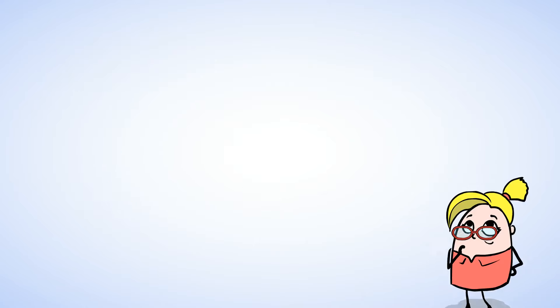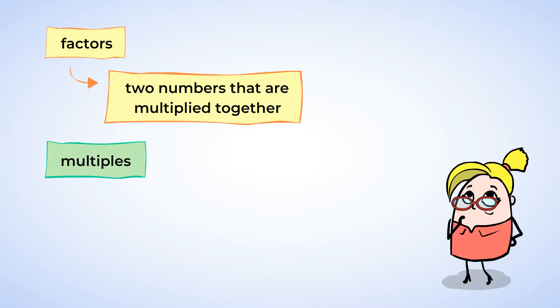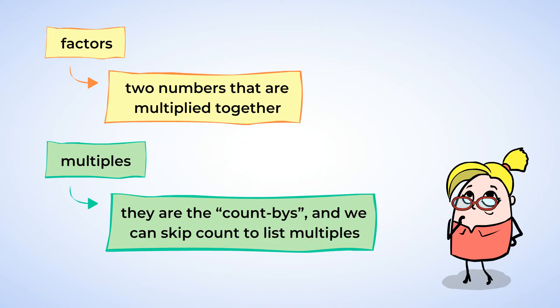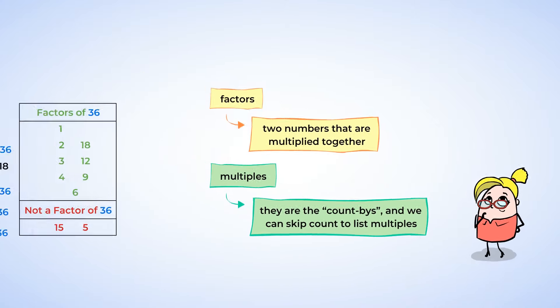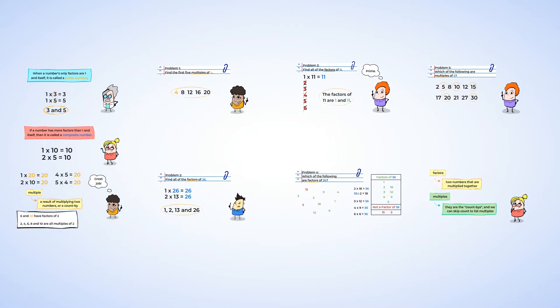Great work today. You learned about factors and multiples. Two numbers that are multiplied together are factors, and multiples are the count bys. And we can skip count to list multiples. Wow! You are expanding your math vocabulary with every lesson. How awesome is that?